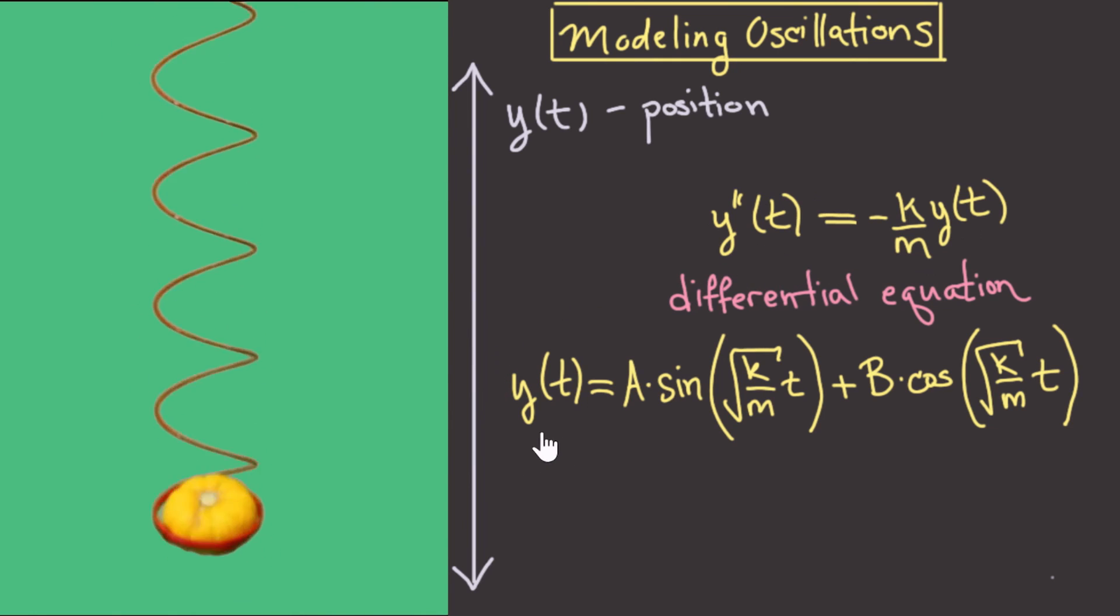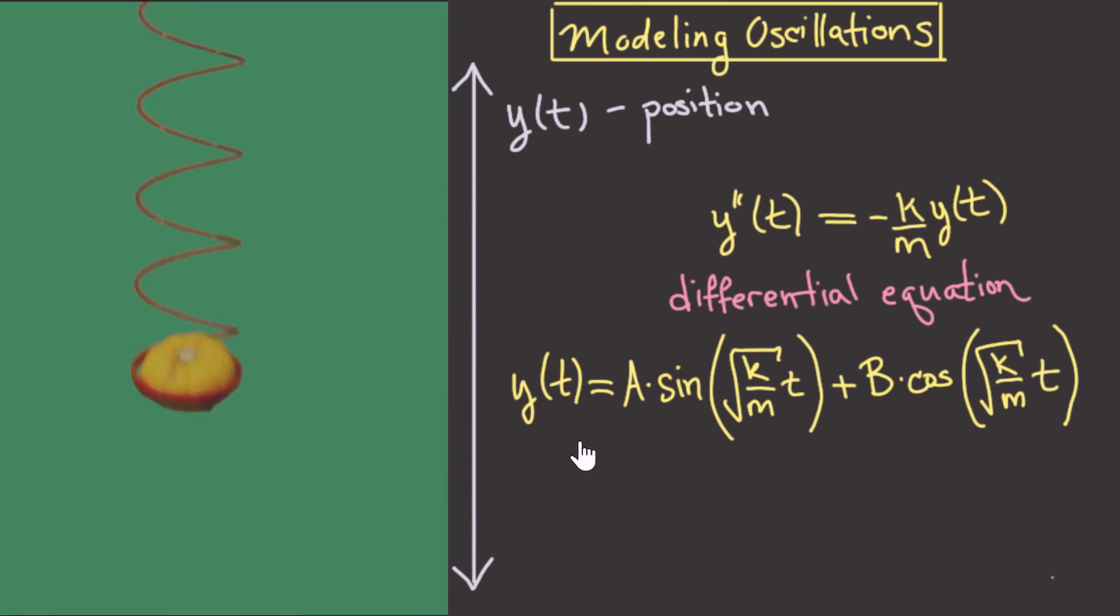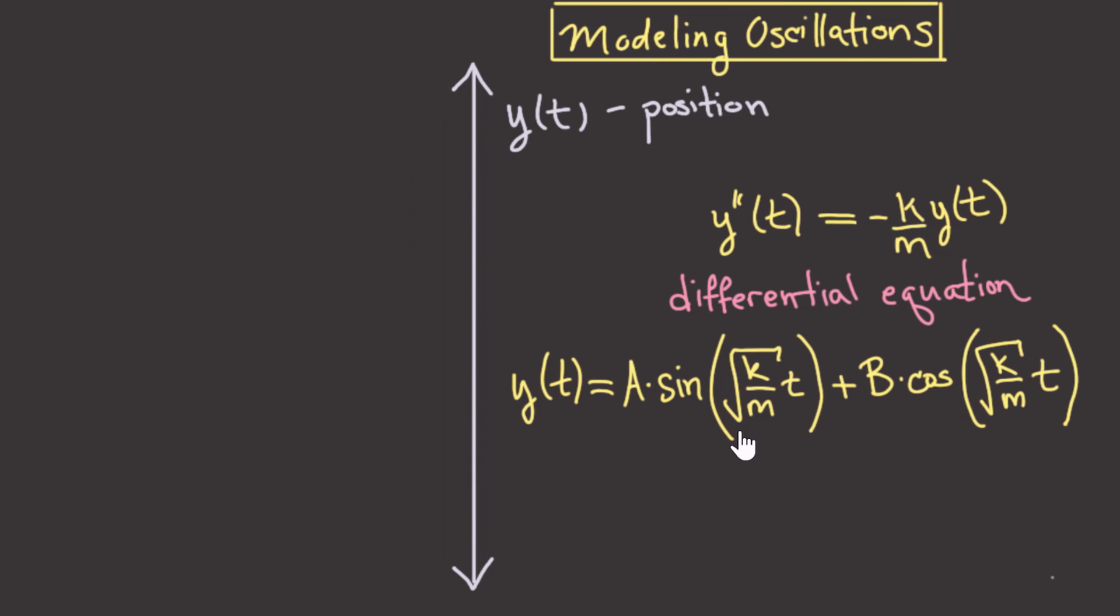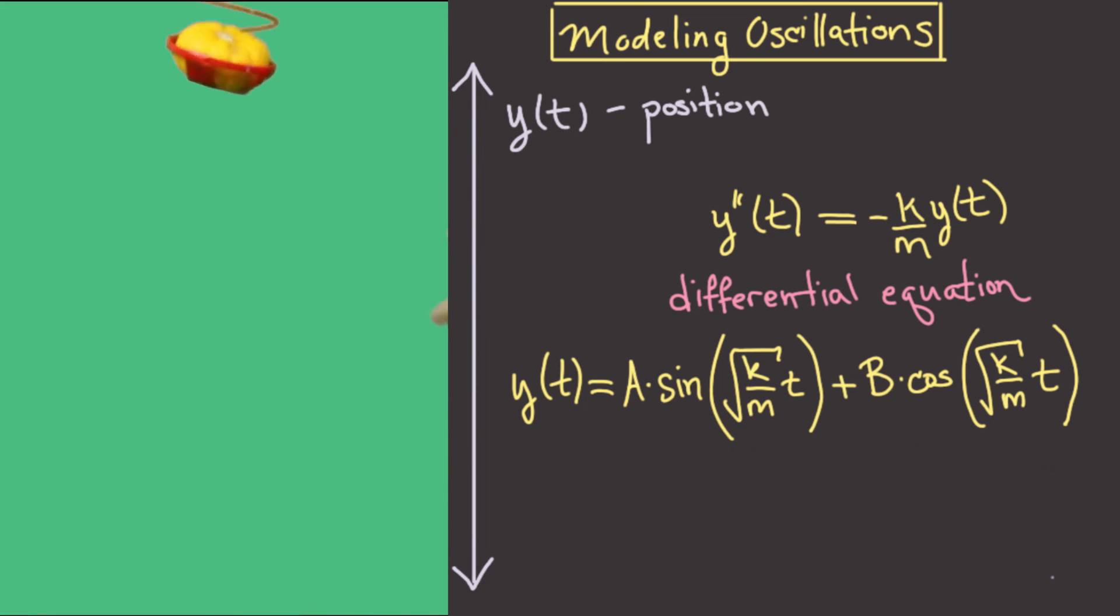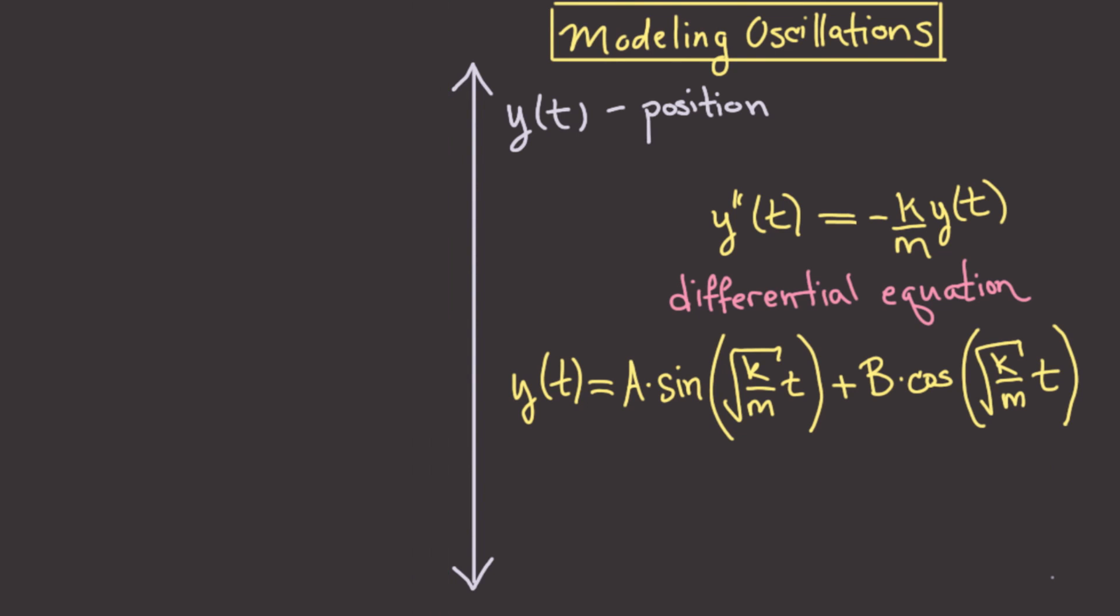Of course, we do have a tiny little problem, even though the square root of k over m is a constant. At this point, you don't have the tools to actually differentiate this function. But fortunately, this marks the end of the first unit about what the derivative is. And in the next unit, we're going to develop a toolbox for differentiating any kind of function that you could ever encounter, including this one. So, good luck on the homework, and we look forward to seeing you in the next unit.